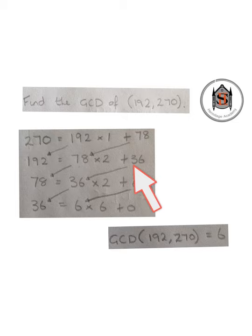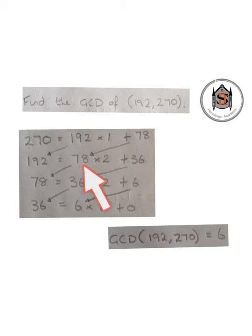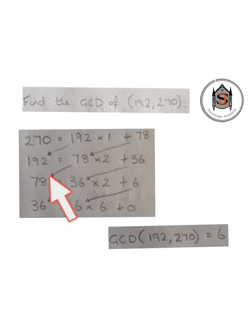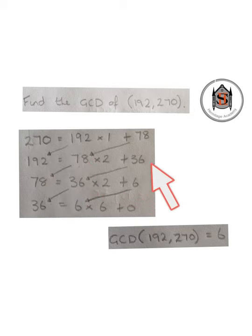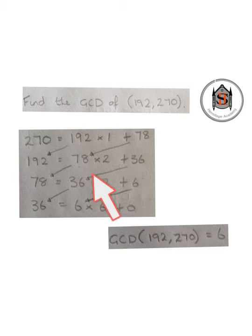We continue the process in the same way. We bring 78 down into the front position and bring down our remainder, which is 36, down into this position here.